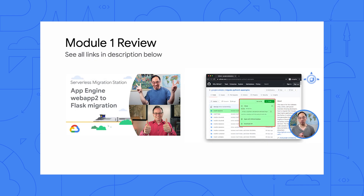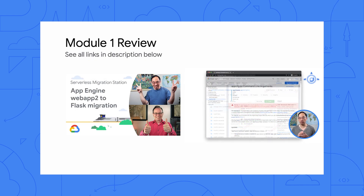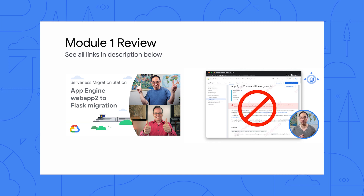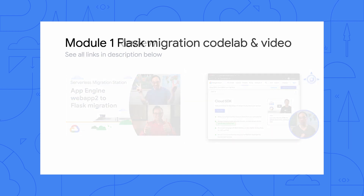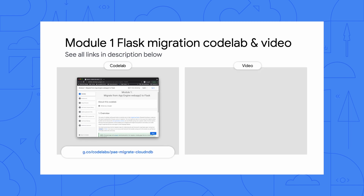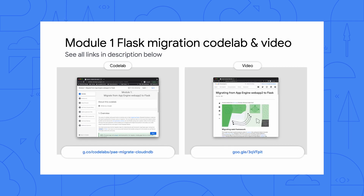Where do we start? We're going to begin with the Module 1 app, the one we just migrated from Web App 2 to Flask, and add use of App Engine Memcache to it. Here's a link to that Module 1 Codelab and video so you can review it if necessary. Both of those are in Python 2. What about Python 3 developers?